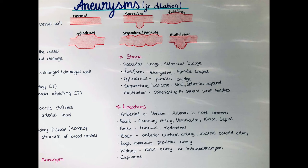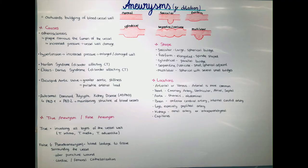In the aorta, aneurysms can occur along its full length but are mainly observed in the thoracic and abdominal aorta. They can also occur in the brain — most commonly in the anterior cerebral artery, which is part of the circle of Willis providing blood flow to the brain — and also in the internal carotid artery. Aneurysms can also be found in the legs, especially in the popliteal artery, and in the kidneys, either in the renal artery or within the renal parenchyma.